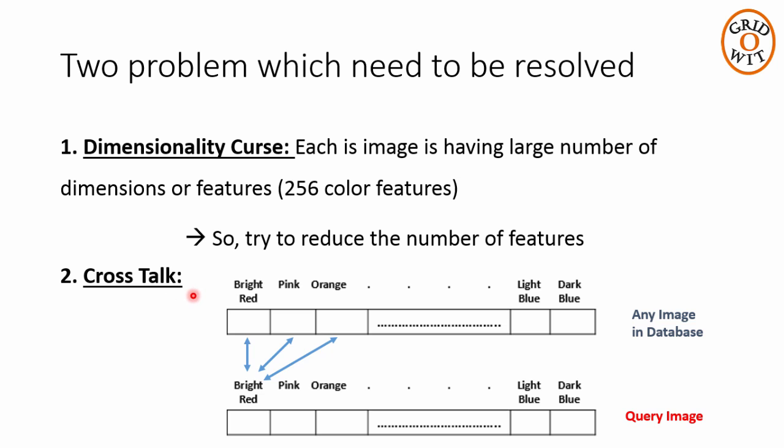Next problem is the cross talk, which says that the colors which are very close to each other need to be considered while calculating the distance. And this leads to more time complexity. For example the bright red component of query image has to be compared not only to the bright red component of other image but also to the pink and orange colors which are the component of other image. So cross talk problem also increases the time complexity of searching.